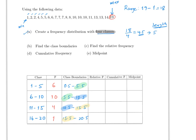Finding class boundaries doesn't always mean you use 0.5 — it depends on the kind of data you have. If the numbers are in the thousands, you might add or subtract 500. If they're very small, you might use 0.005. In this case, since all values are whole numbers, it makes sense to use 0.5 up and 0.5 down.